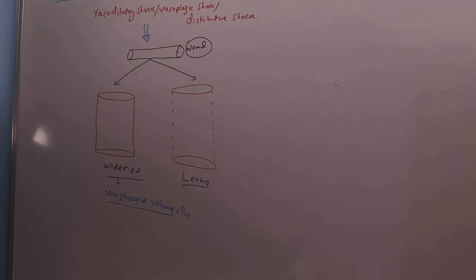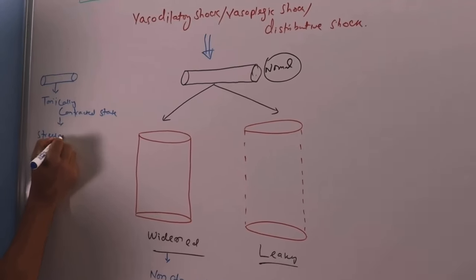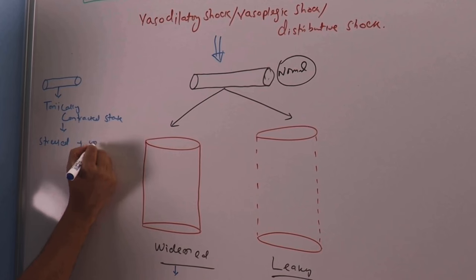What is non-stressed volume? So this is the blood vessel. Blood vessel is in a tonically contracted state because of the vascular smooth muscle. So it contains two types of fluid inside. One is called stressed volume. One is called unstressed volume.